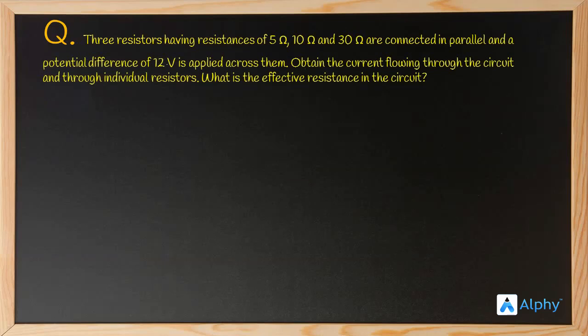In a parallel connection, we have two common points and the resistors are connected between them. The potential difference across all resistors in a parallel connection is the same — that is V, the applied potential difference.